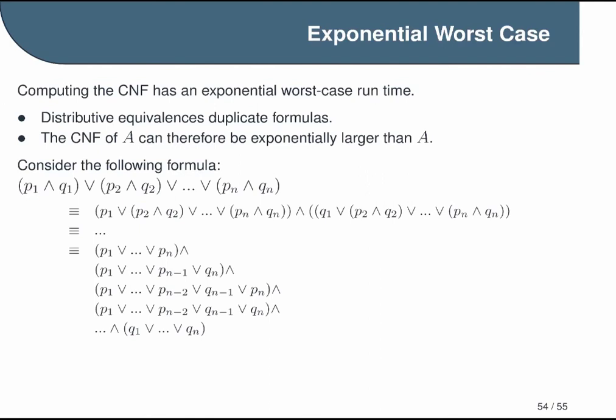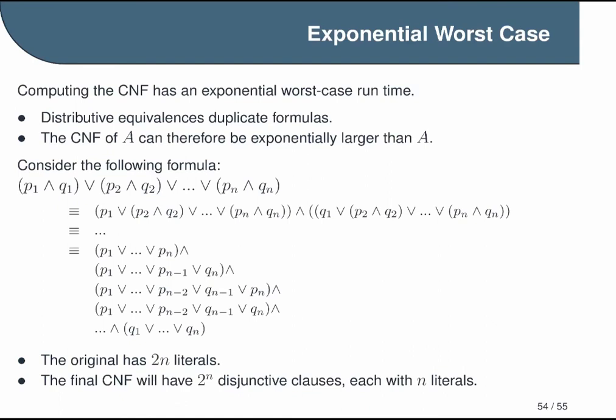So each clause has either a p1 or a q1, and then a p2 or a q2, etc., all the way up to n. In fact, we end up with a clause for every possible selection. So since we have two choices for each of n different slots, we end up with 2^n clauses. Now we started with n clauses, each with two literals, so 2n literals. Now we're ending up with 2^n clauses, each with n literals. If that happens, obviously this is going to cause some problems.